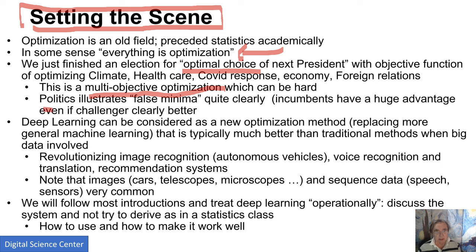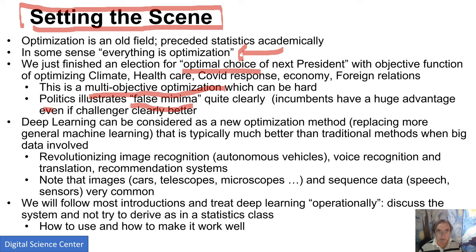Politics also illustrates another key feature of optimization: false minima. These are minima or optima which are locally sound — if you make small changes, you stay in that minima. But if you make a big change, you can make things better. You can see that in elections when incumbents have a huge advantage, even if the challenger is clearly better. The two-party system also illustrates this — it's very hard to dislodge a party even if a different party would be better.